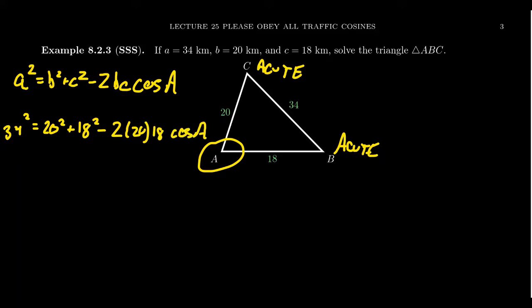Let's try to solve this going forward. 34 squared is 1156. Then we get 20 squared, which is 400, and 18 squared is 324. Then we take 2 times 20 times 18, which gives us 720, and then cosine of A. We need to solve for the angle A.